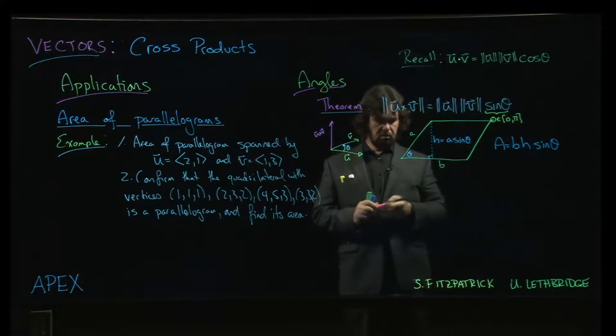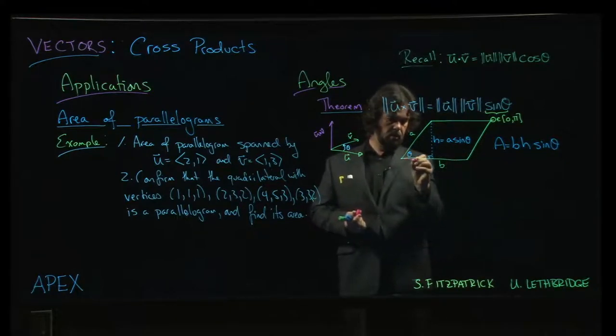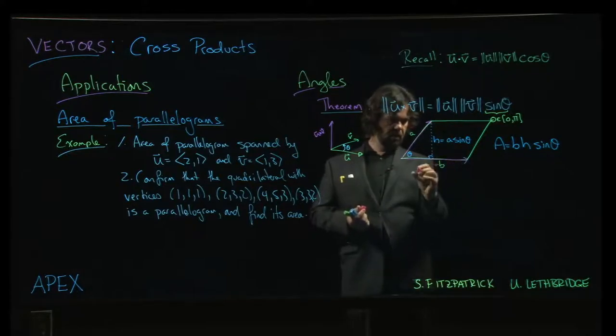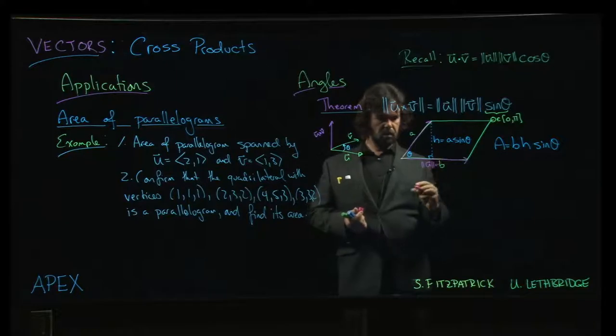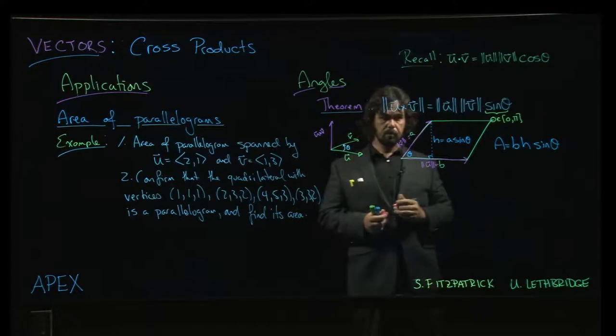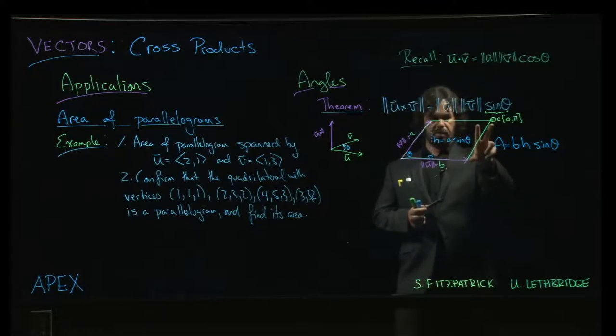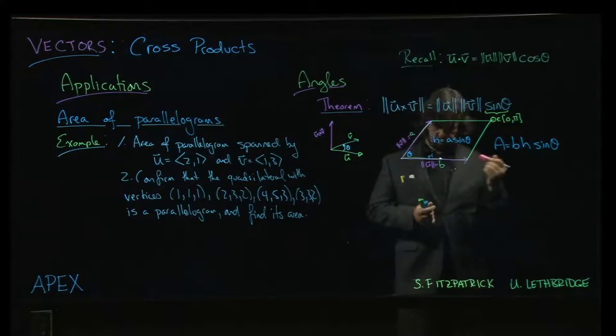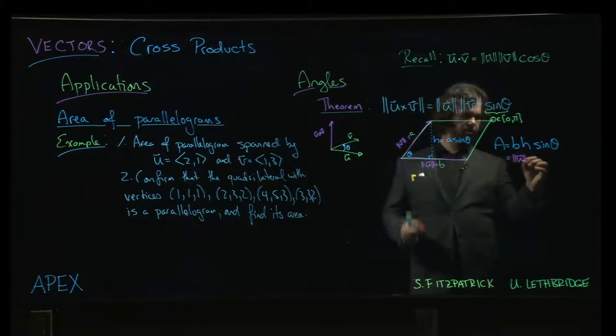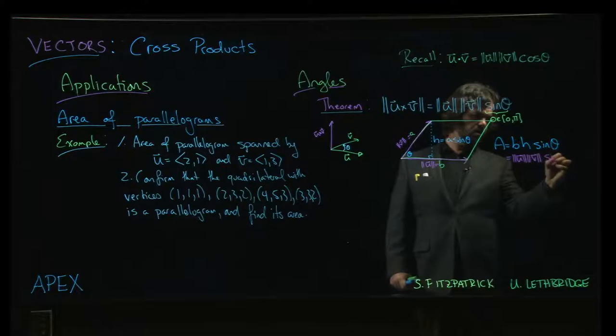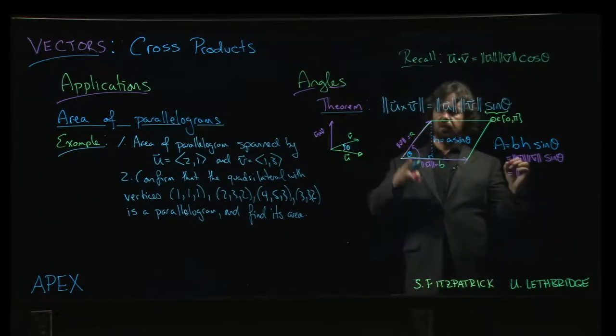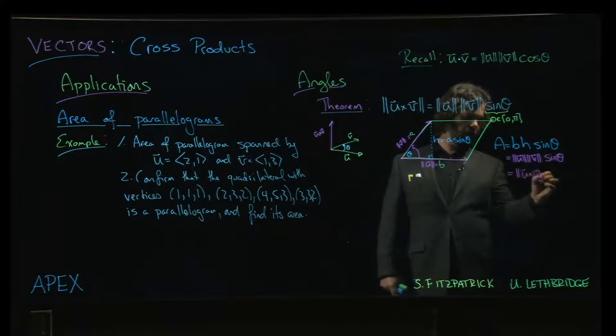One of the ways you can construct a parallelogram is by spanning it with a pair of vectors. So b here could be the magnitude of a vector u, a could be the magnitude of some vector v. And then this would just be another copy of v, and up here is another copy of u. In that context, b is the magnitude of u, h is the magnitude of v, sine theta remains sine theta, but theta is now the angle between those two vectors. So this is just, using this theorem, the magnitude of the cross product.